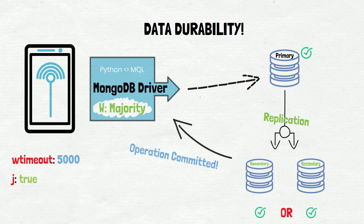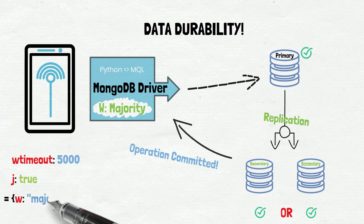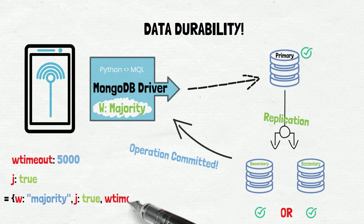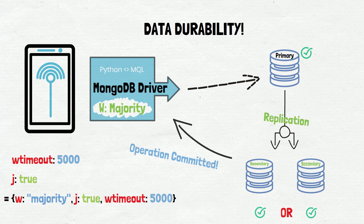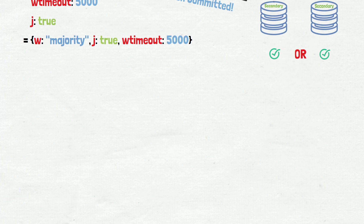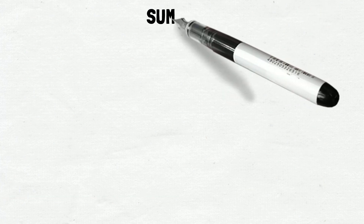Finally, there's a journal flag that, if enabled, will require confirmation of a write to MongoDB's on-disk journal for commit acknowledgement. The journal in MongoDB is an additional mechanism that allows the storage engine to run checkpoints that add more protections for data durability.